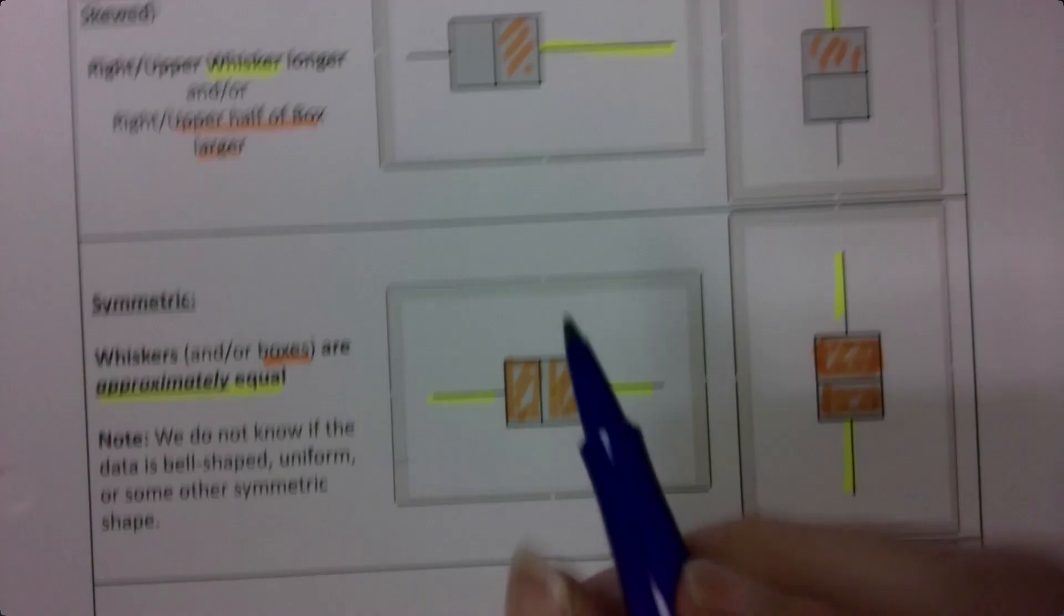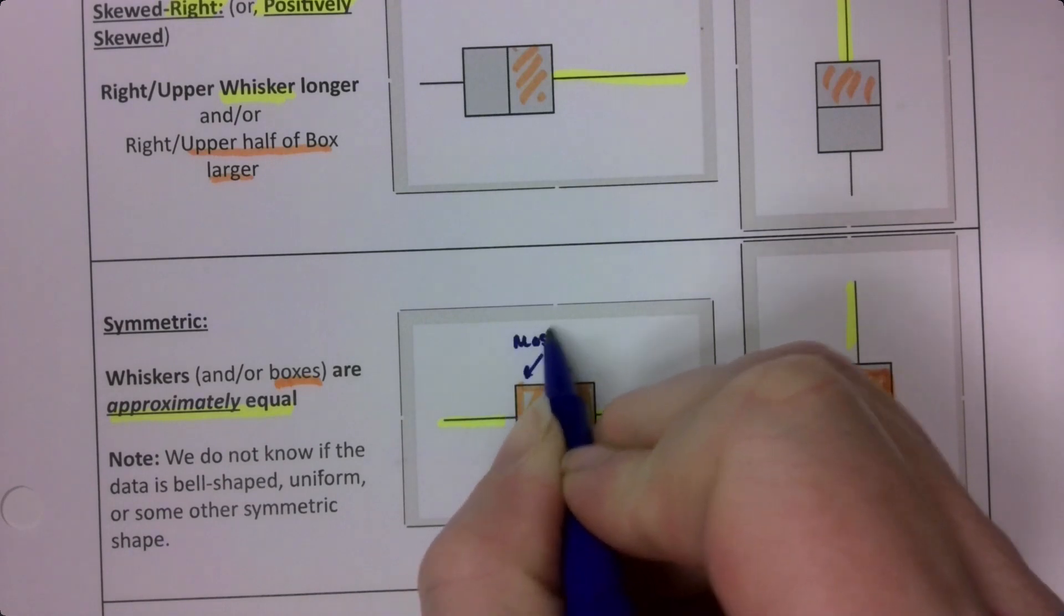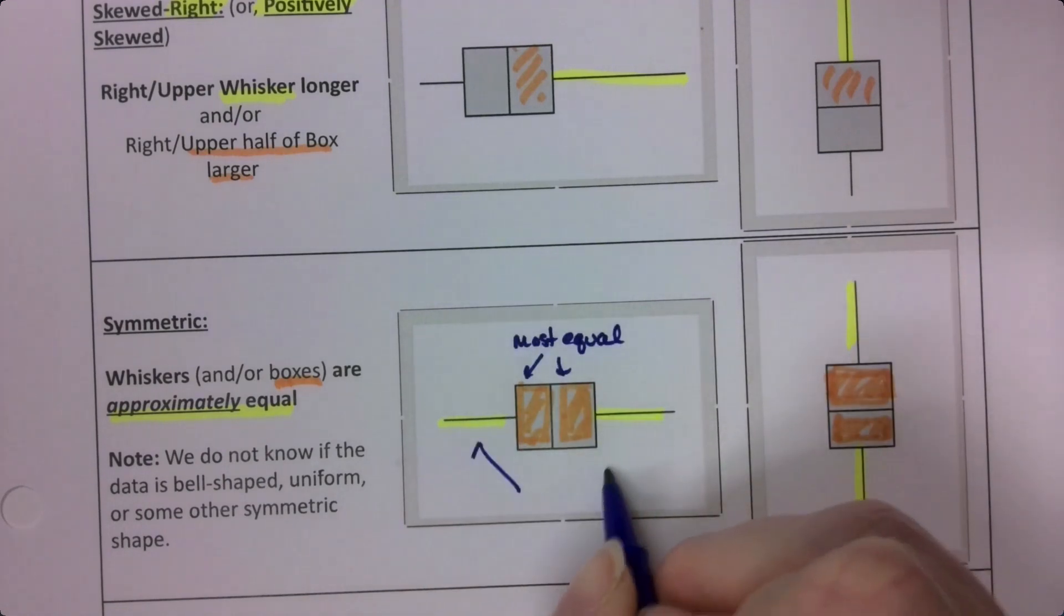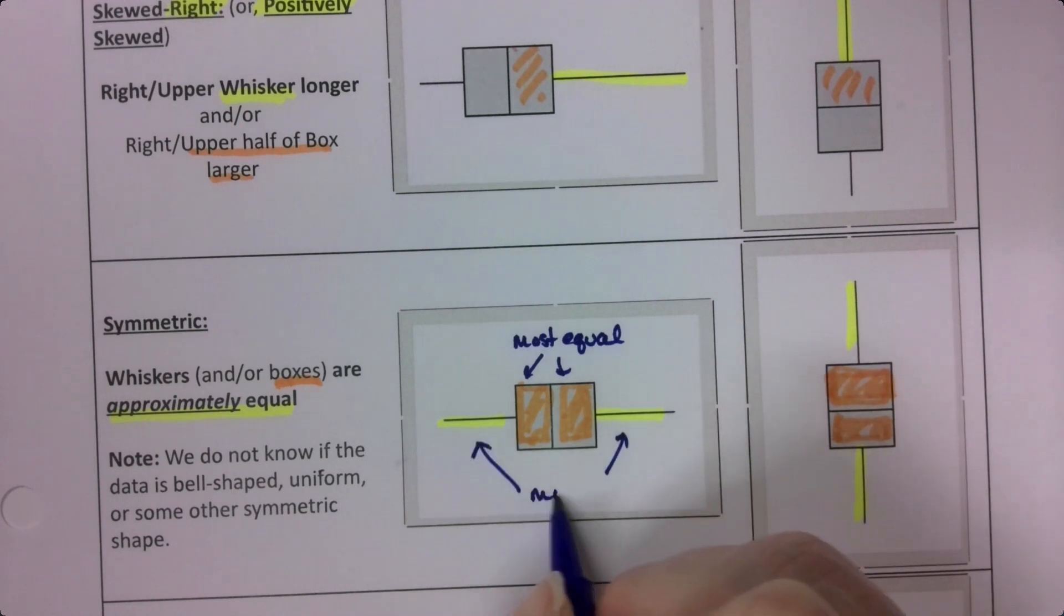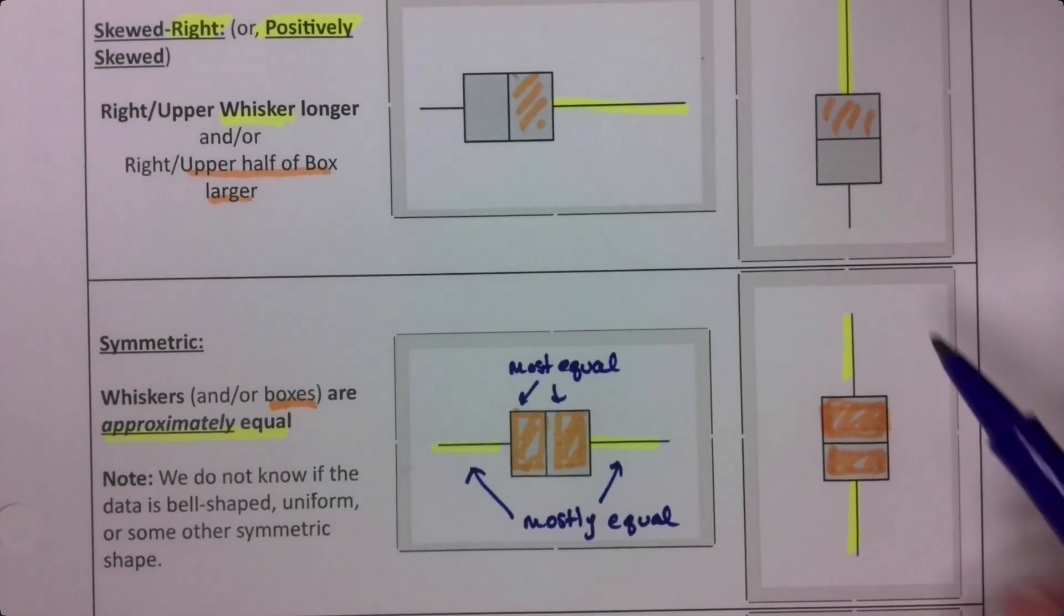then it's symmetric. So let me make a note. So this would be mostly equal. And these two would be mostly equal. Same with the other one. The other one is just the same graph, just vertically.